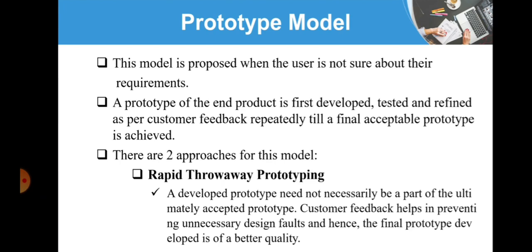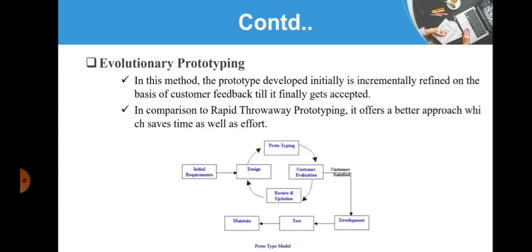The specification is then derived from the prototype and the system is implemented. Then in Evolutionary Prototyping, the model starts with those requirements which are best understood and using these specifications, the prototype is built. Once the prototype is built, development is completed and then it is checked for customer satisfaction.